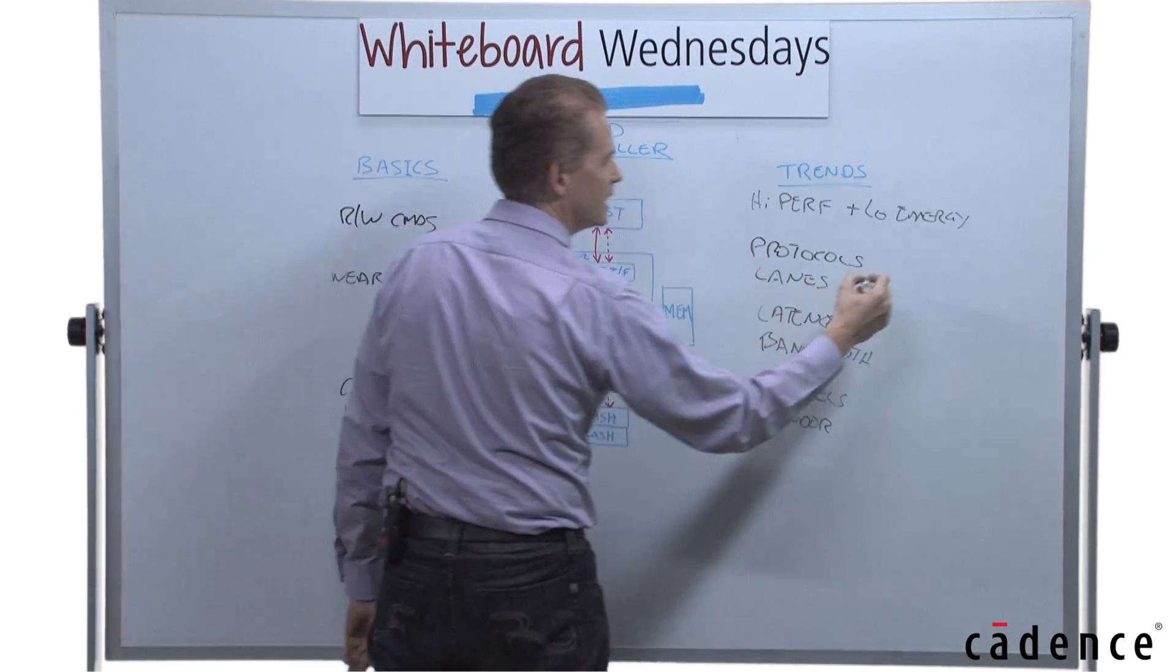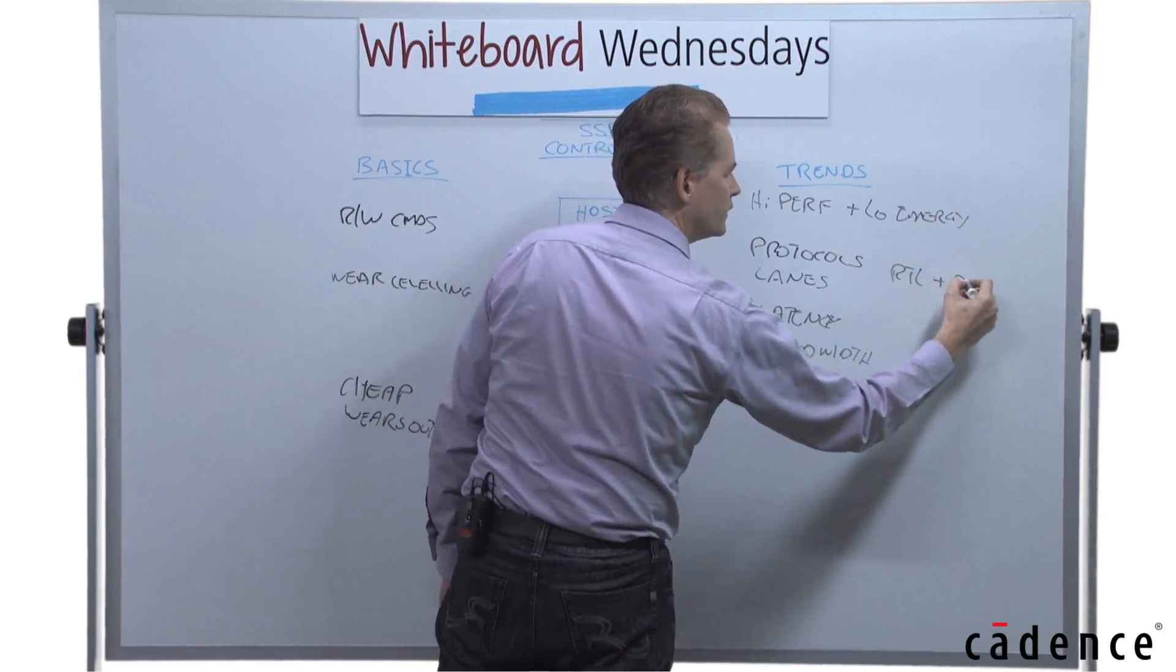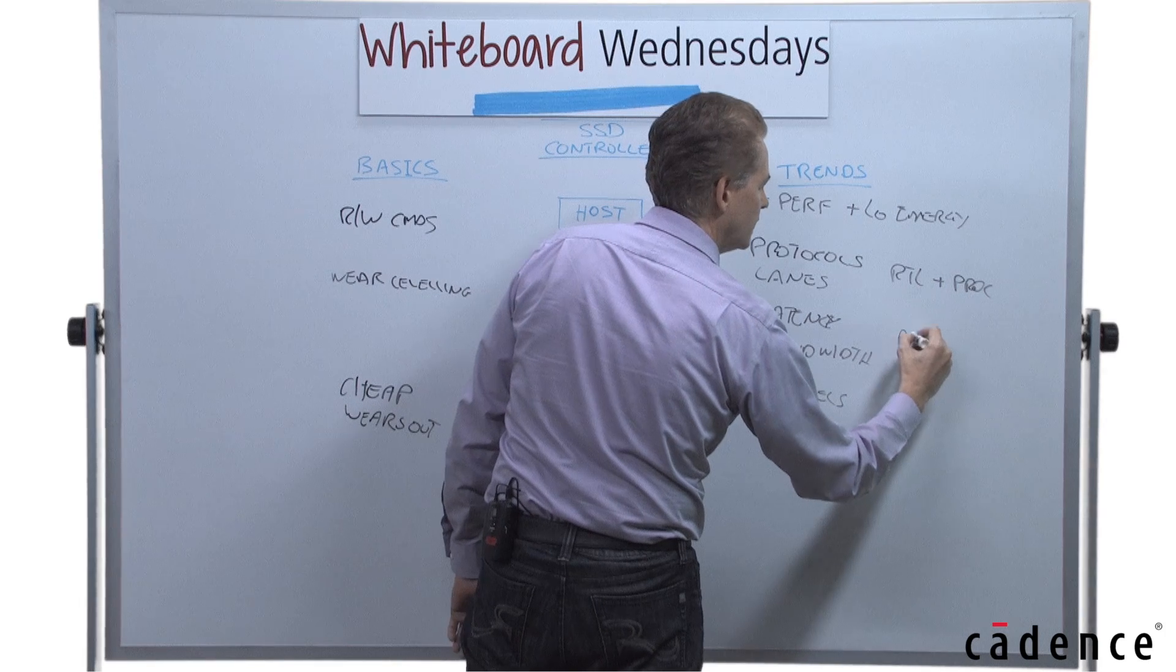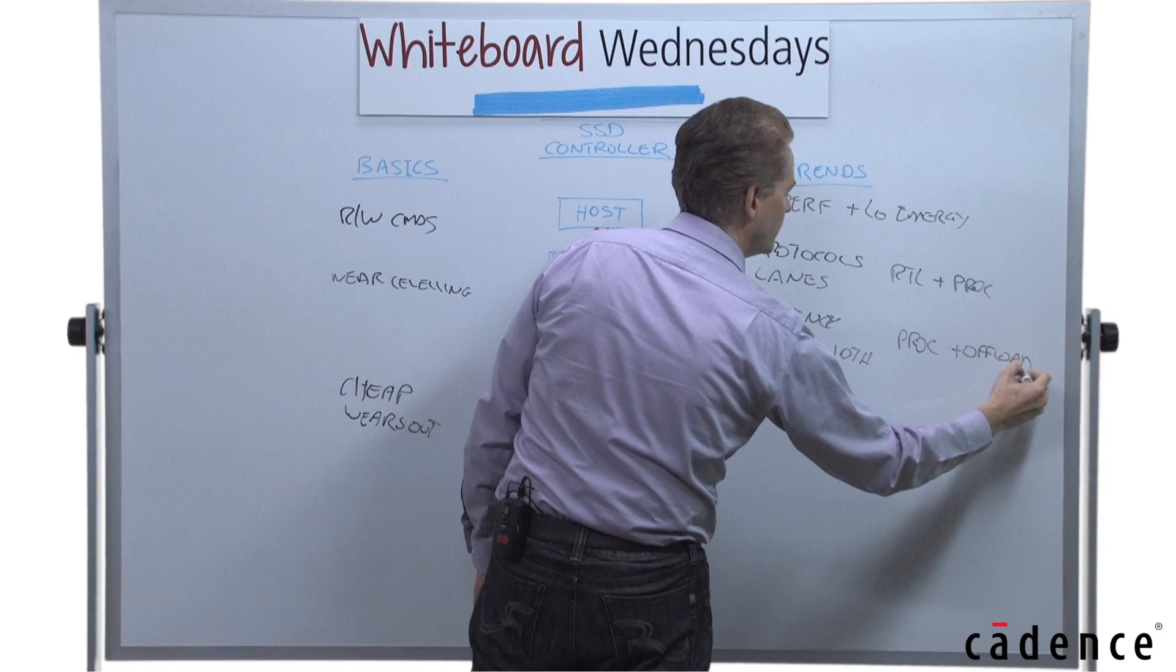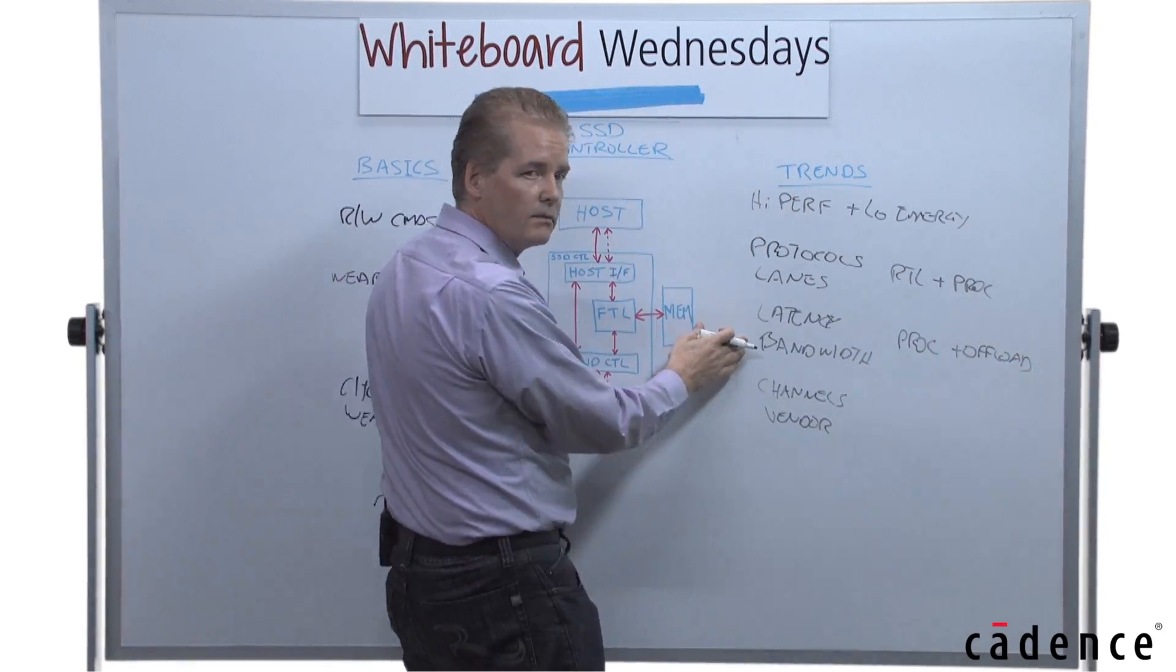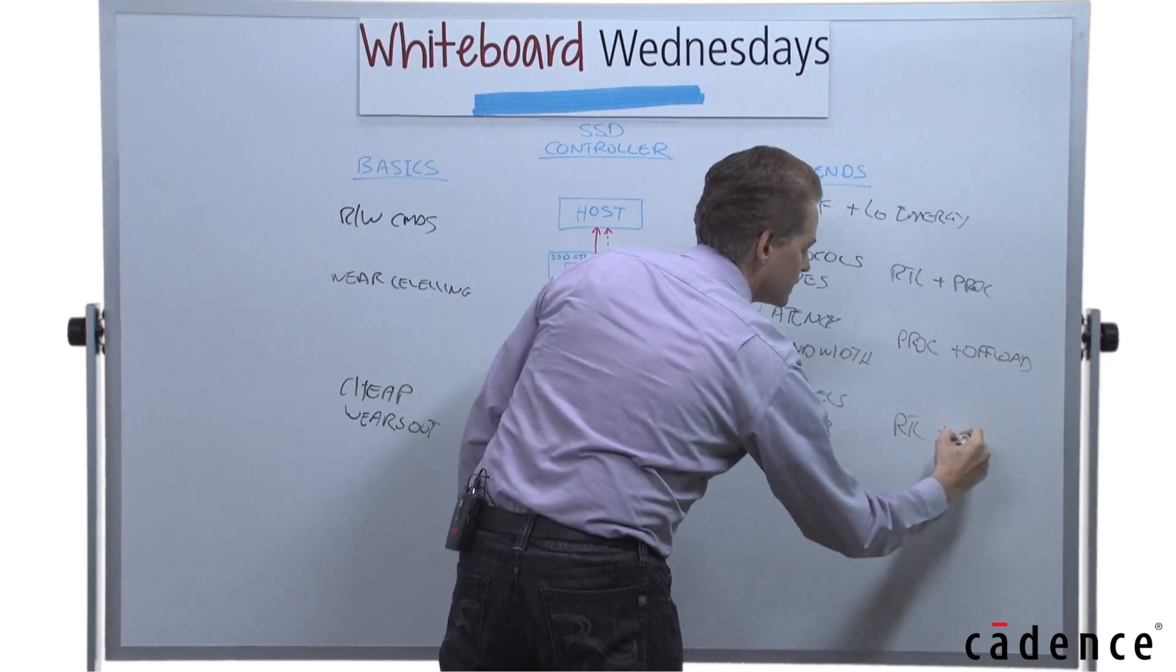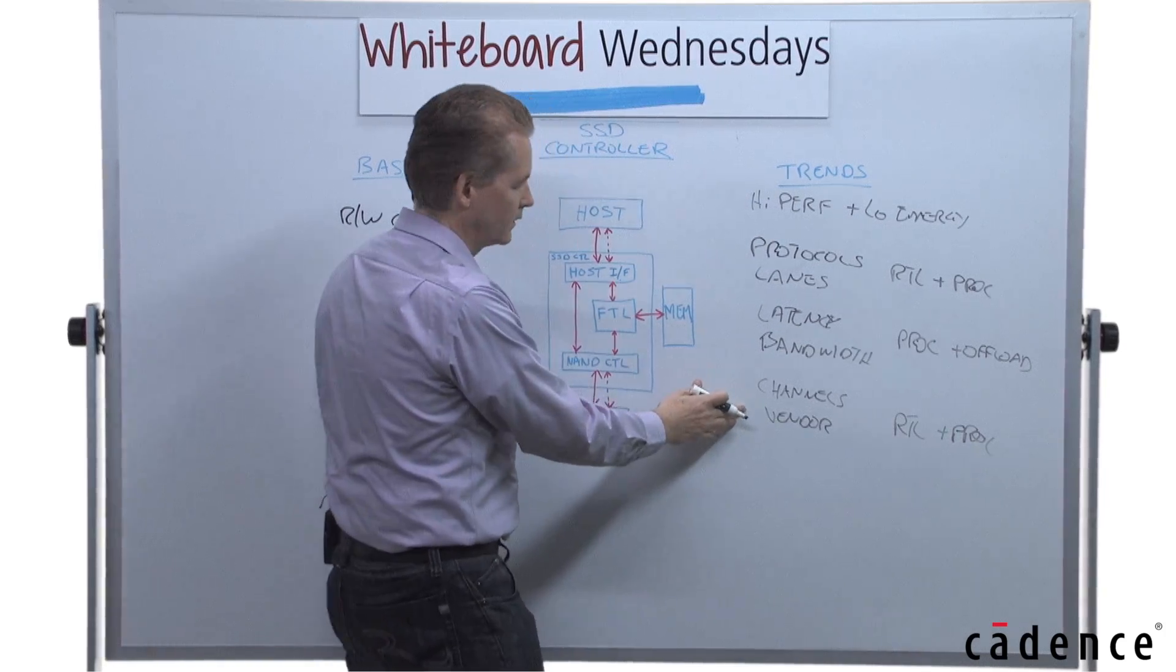The protocols and lanes on the host have traditionally been done with RTL, but we're seeing a move to add processors there to give flexibility for multiple protocols. The FTL is typically done with a processor today, or one or more processors. We're looking to add offload so we can hide the latencies with the DDR and make efficient use of the bandwidth. On the NAND side, that's often done in RTL, but there's a trend to add more processors to handle vendor differences.